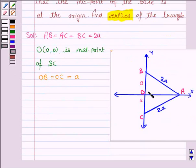Since B lies along the y-axis, the x-coordinate must be 0, and since OB has length a, B has coordinates (0, a). Similarly, C has coordinates (0, -a). Now we have to find the coordinates of A.